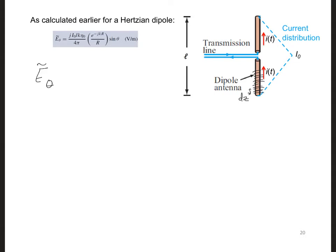E_theta equals the integral from z equals minus L over 2 to L over 2 of dE_theta. And dE_theta is the contribution to the electric field from each Hertzian dipole segment.